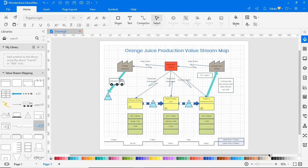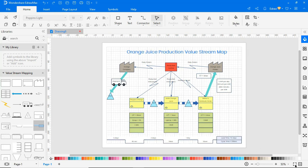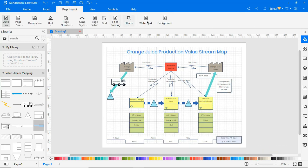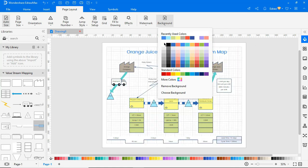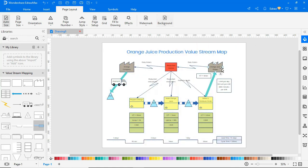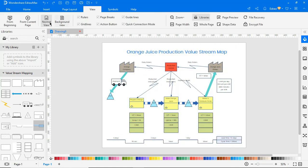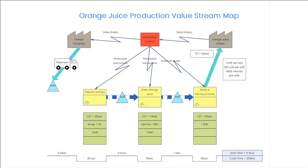Click on the whole page icon to view the diagram in a single frame. Navigate to Page Layout and choose the white color under background. Go to the View tab. Click on the From Current Page icon to view the diagram in presentation mode.